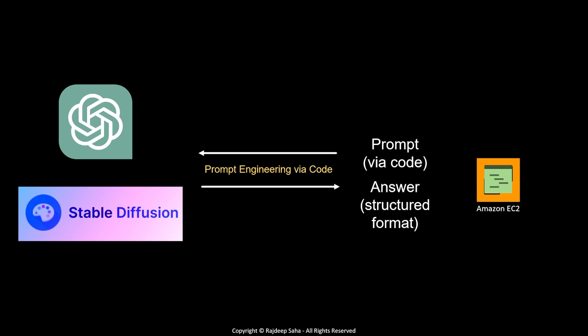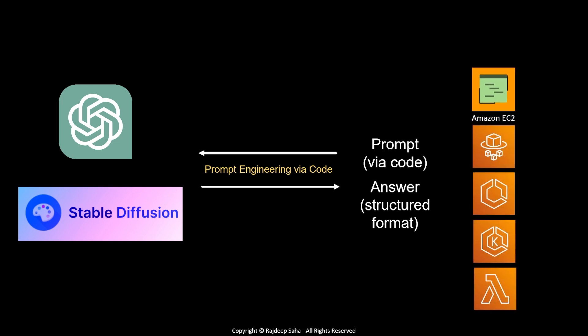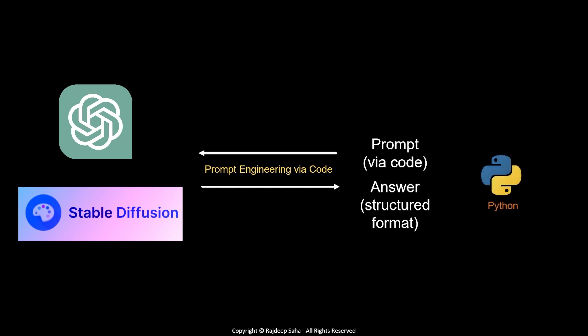Going back to the choice of compute, Amazon EC2 is just an example. You can run this code in any compute service such as Fargate, ECS, EKS, Lambda, etc. I am learning prompt engineering using Python. You can choose any programming language, but Python and JavaScript have advantages because there are a lot of libraries and examples using these two languages.